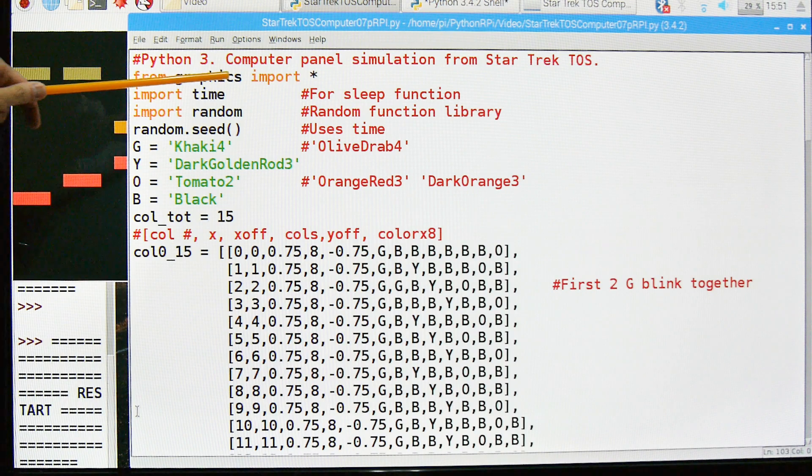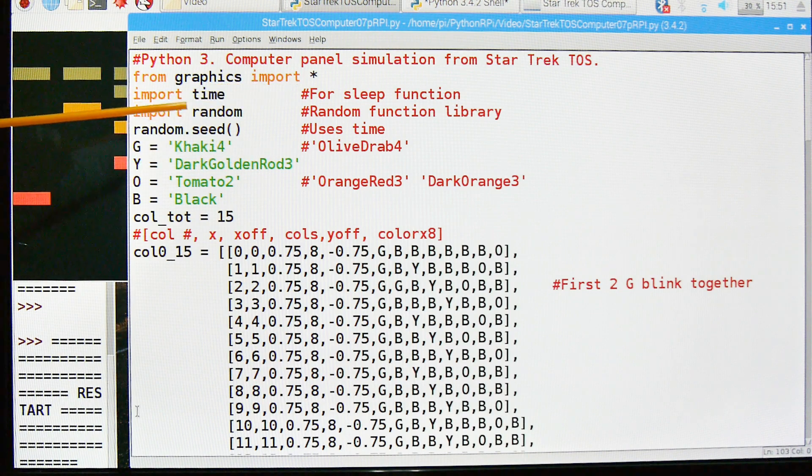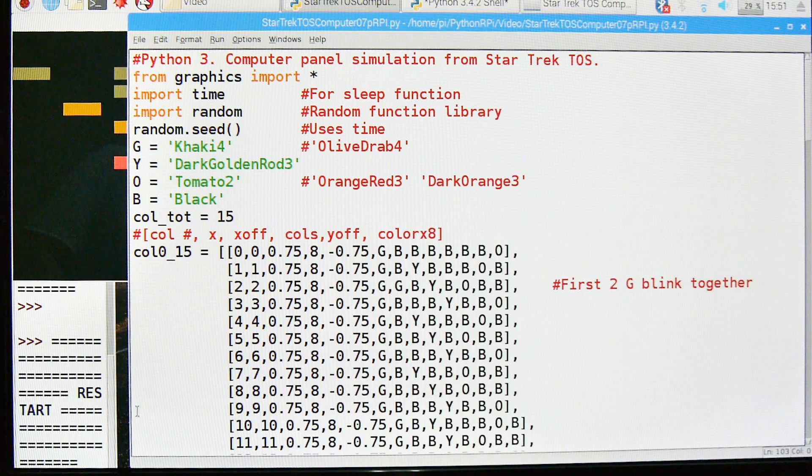It's a computer panel simulation from Star Trek, the original series. We need the graphics library, and this comes from John Zello's graphics library. He did a really excellent job. It's out there for free. Import time, and we're going to use the sleep function. We need to import random because we're going to use randomness to blink the lights on and off.